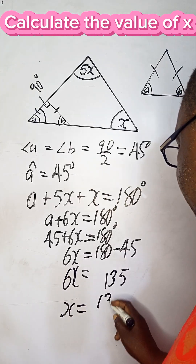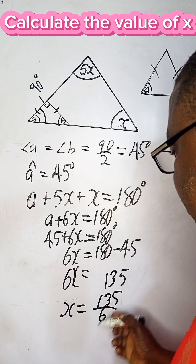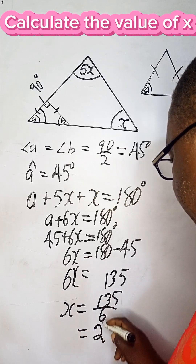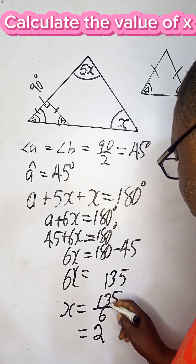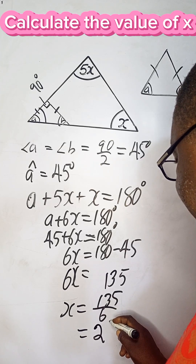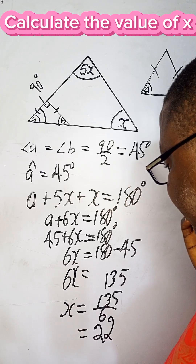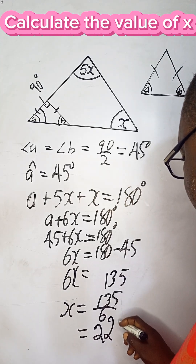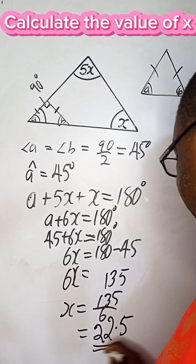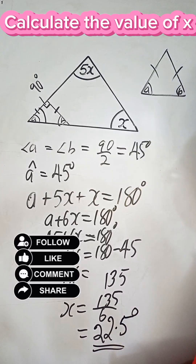So 6x = 135 degrees, therefore x = 135 divided by 6. 135 divided by 6 gives us 22.5, so the value of x is 22.5 degrees.